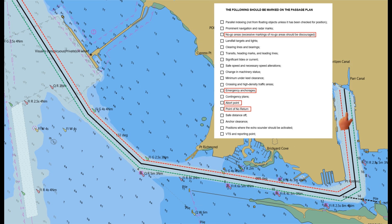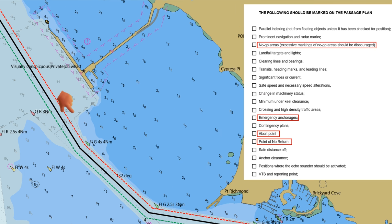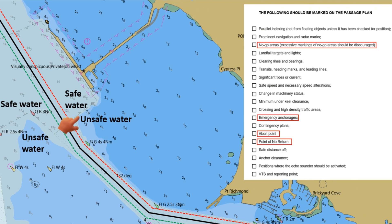Assuming this is our planned track, we will be entering the port and passing through confined waters. In this electronic navigational chart, this is the shallow contour and this is the safety contour, which separates the safe and unsafe waters.